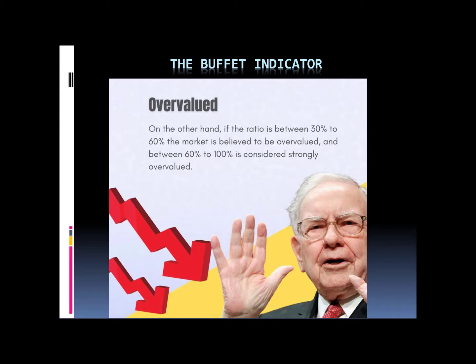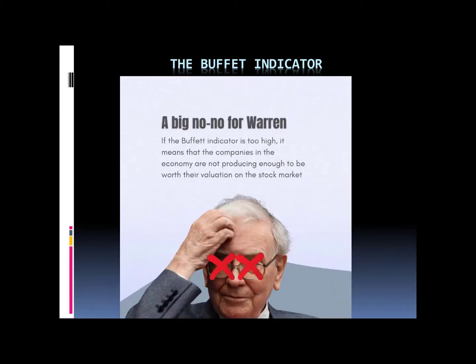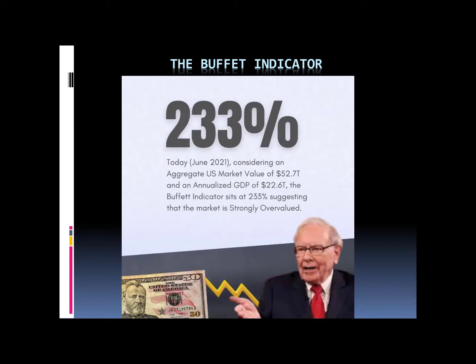It is strongly overvalued if the ratio goes from 60% to 100%. So if the Buffett indicator is too high, it means that companies in the economy are not producing enough to be worth their valuation on the stock market.